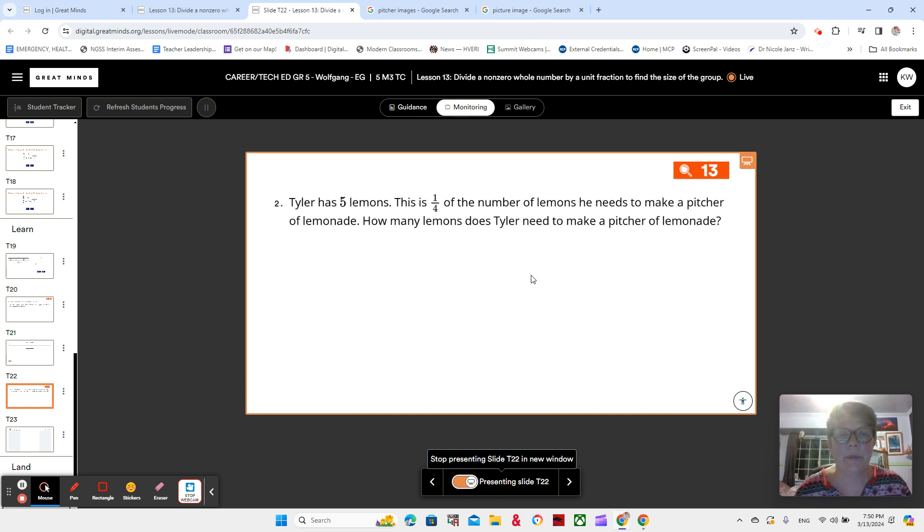And here we have a problem that's number two in your book. So please make sure you follow along and write your notes. Tyler has five lemons. This is one fourth the number of lemons he needs to make a pitcher of lemonade. How many lemons does Tyler need to make a pitcher of lemonade? Okay, before we go any further, let's talk about pitcher.